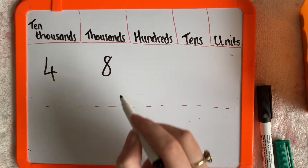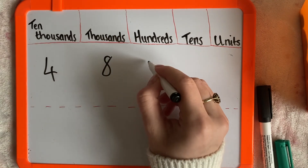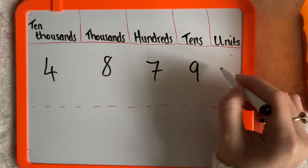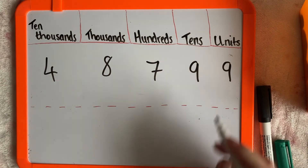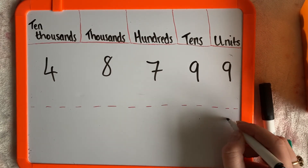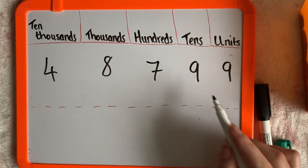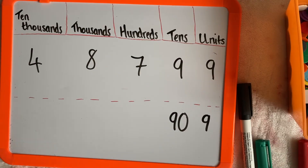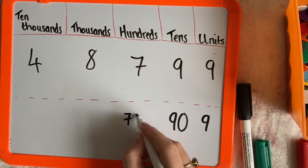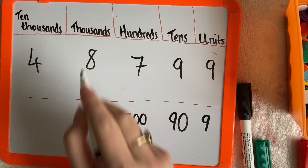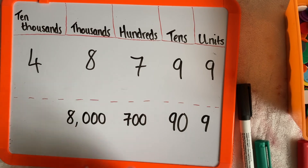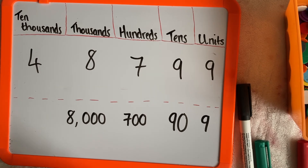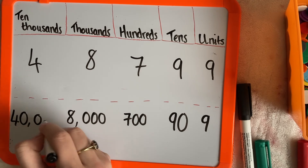48,799. When this nine is in the units column, it's worth nine. When this nine is in the tens column, it's worth 90. When the seven is in the hundreds column, it's worth 700. When the eight is in the thousands column, we've got eight thousands, so it's 8,000. And when the four is in the ten thousands column, we have four times ten thousand, so we've got four lots of 10,000, which is 40,000.